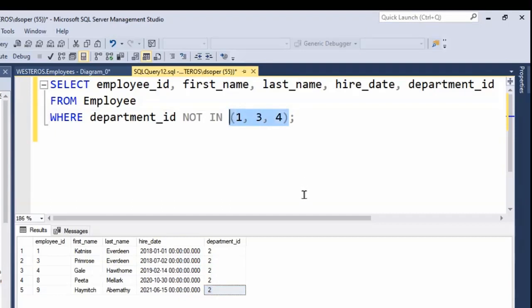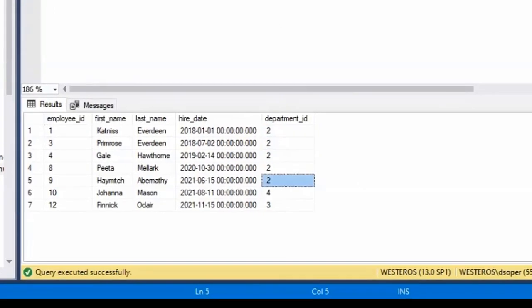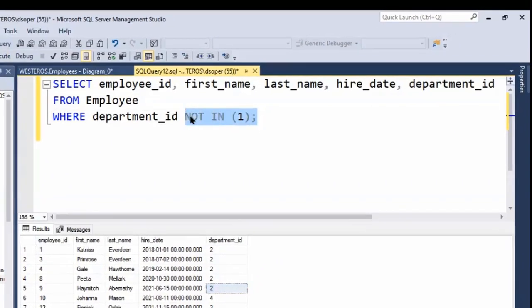So that can be really useful as well. If you want everybody except those who work in a particular one, let's say for example there's something special about department 1, maybe it's our managers and we want to limit that. I don't know why we would do this like this. You could do it like this: give me everyone that's not a manager. That would just be the list there.